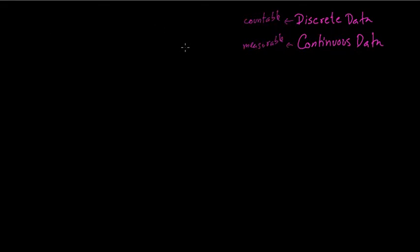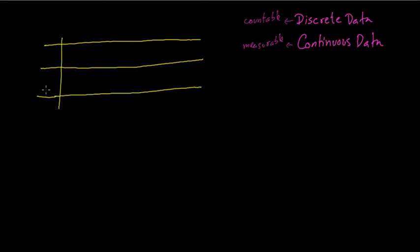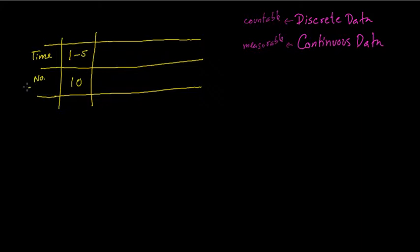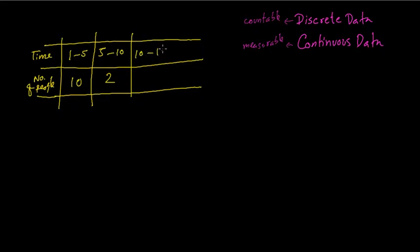Suppose we want to find out the time taken for someone to complete a task. Different people take different amounts of time, so we group the data. For example, 10 people completed the task between 1 to 5 minutes, 2 people between 5 to 10 minutes, 3 people between 10 to 15 minutes, and 5 people between 15 to 20 minutes. The number of people is the frequency.